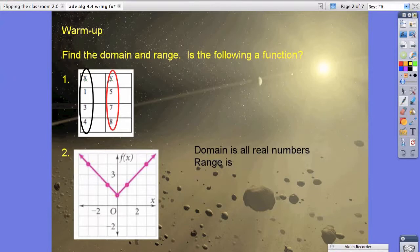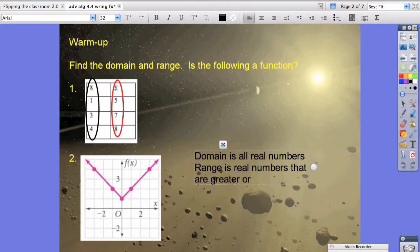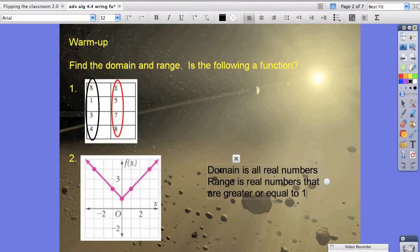But if you look at the graph, it says that it's going to go upwards infinitely long. So we say that our range is all real numbers that are greater than or equal to 1. So that's our domain and range for both of these problems.